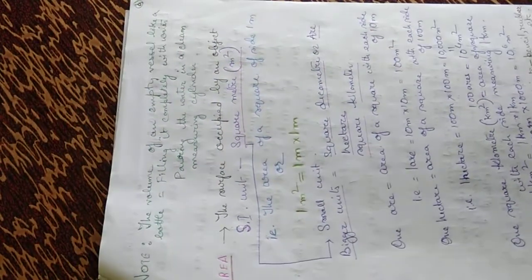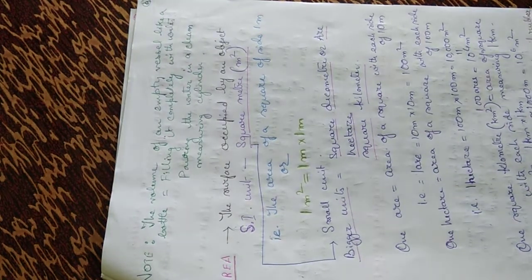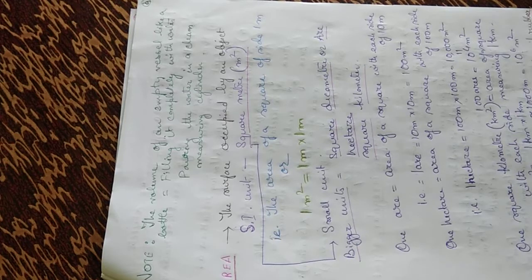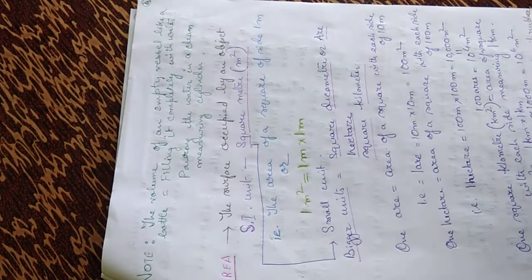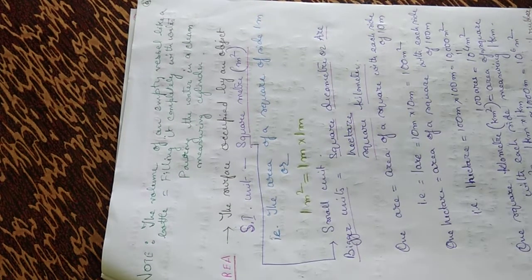Note: the volume of an empty vessel, like a bottle, is found by filling it completely with water and pouring that water into a clean measuring cylinder. That particular amount of water poured into the measuring cylinder gives its volume, and that will be the volume of the empty vessel.